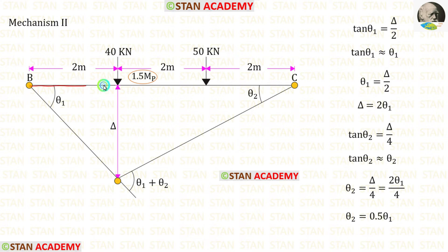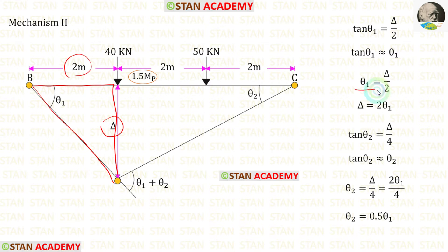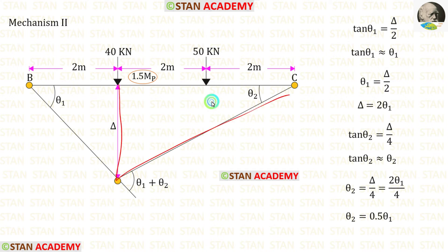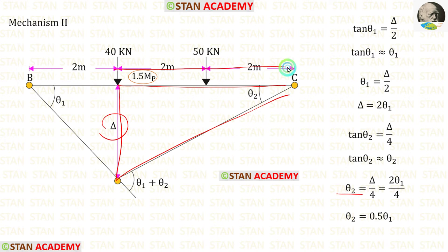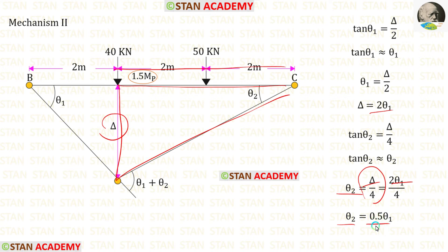Let us take this triangle. In this triangle, theta 1 is equal to delta upon 2, giving us delta 1. Now let us take the right side triangle. In this triangle, theta 2 is equal to delta upon 4. Substituting delta = 2 theta 1, we get theta 2 = 0.5 theta 1.